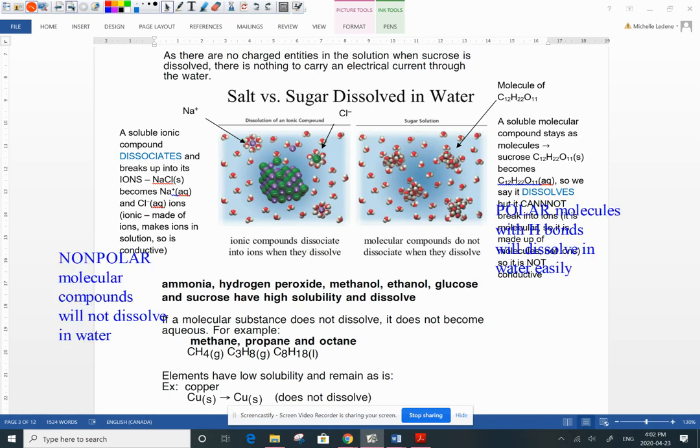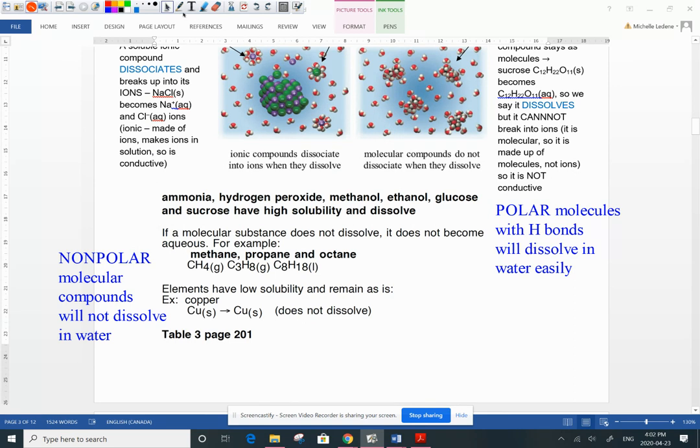So I have some examples for you guys here of molecular compounds. Molecular compounds are not going to act like ionic compounds because they're molecules. So you have to decide, is that molecular compound polar or non-polar? Here are some non-polar substances: methane, propane, octane. These guys do not dissolve in water. So when you're writing out the equation for a compound like methane, it is going to stay the same state. It does not become aqueous. It does not dissolve. So we're not writing aqueous, we're writing it stays a gas.